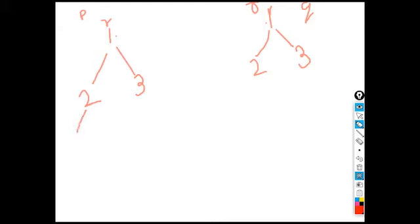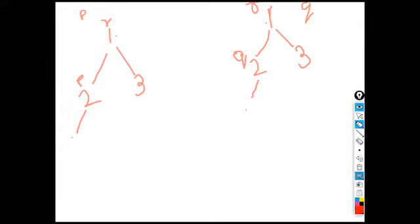Then I iterate further: now p and q are at the two nodes. p-dot-left gives me null and q-dot-left also gives me null. We iterate the right part as well — again null on both sides. So the left part is done and we found both the left subtrees of the two and two nodes are equal and match in both trees.